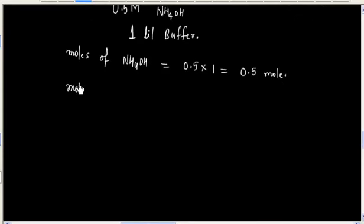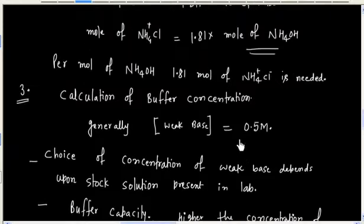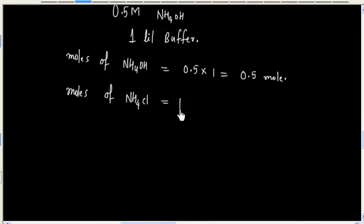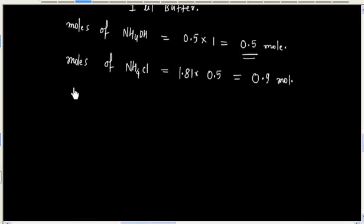Now mole of ammonium chloride is 1.81 times 0.5 and this is 0.9. We can also calculate weight of ammonium chloride, that is 0.9 into molecular weight of ammonium chloride.